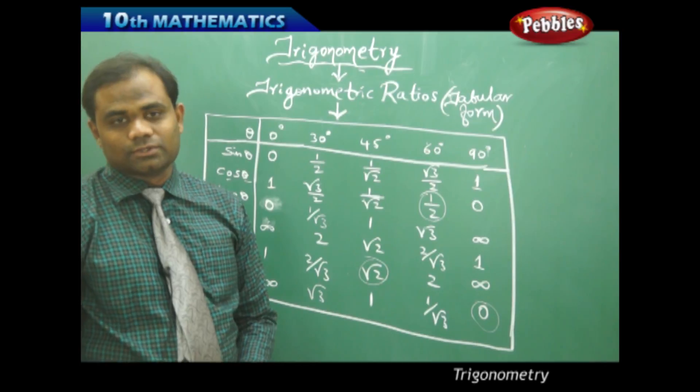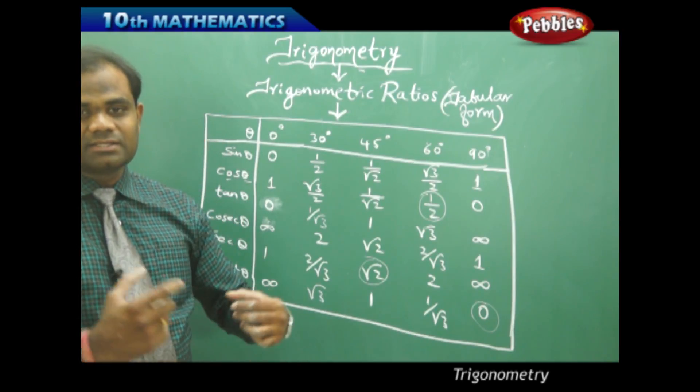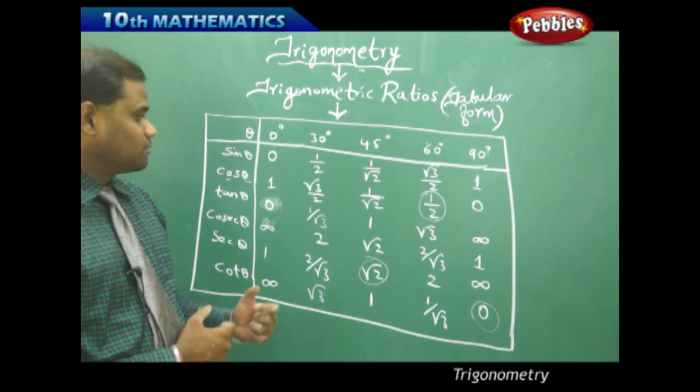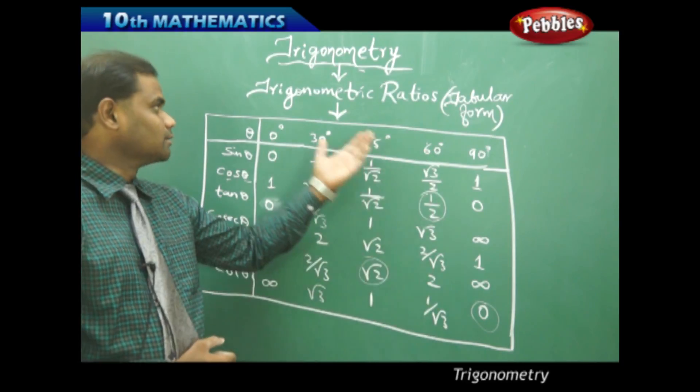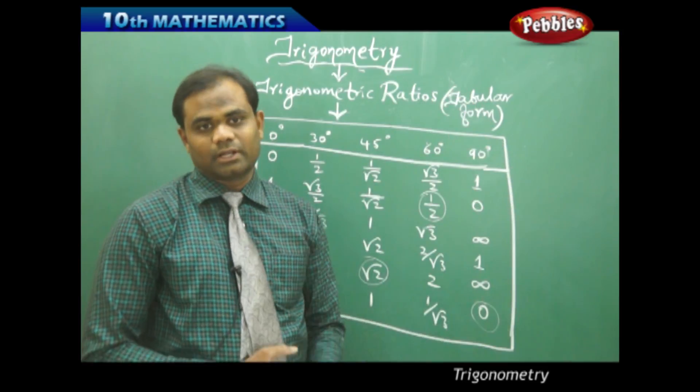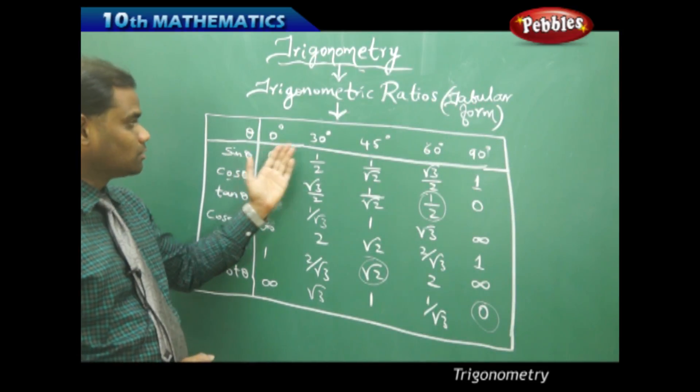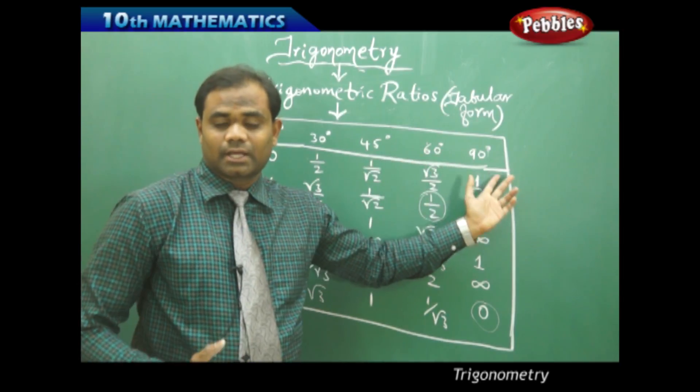So all the ratios with their special angles which we have found can be easily identified through the table and memorized through the tabular form of writing the trigonometric ratios for the special angles 0, 30, 45, 60 and 90.